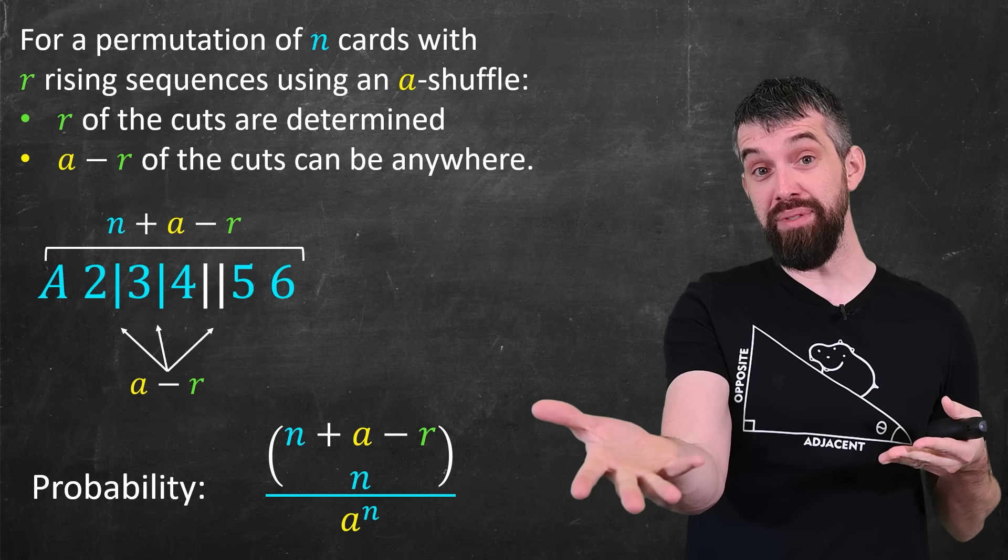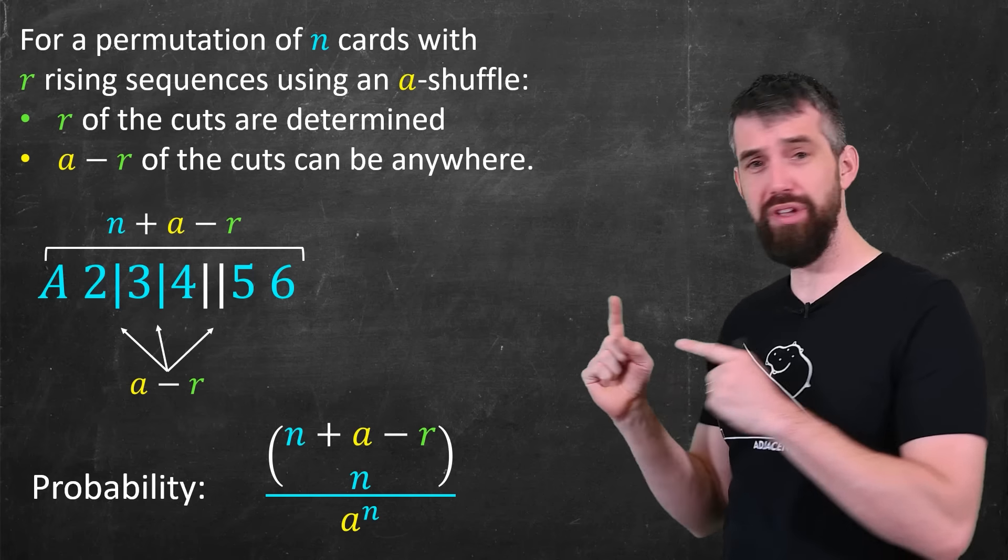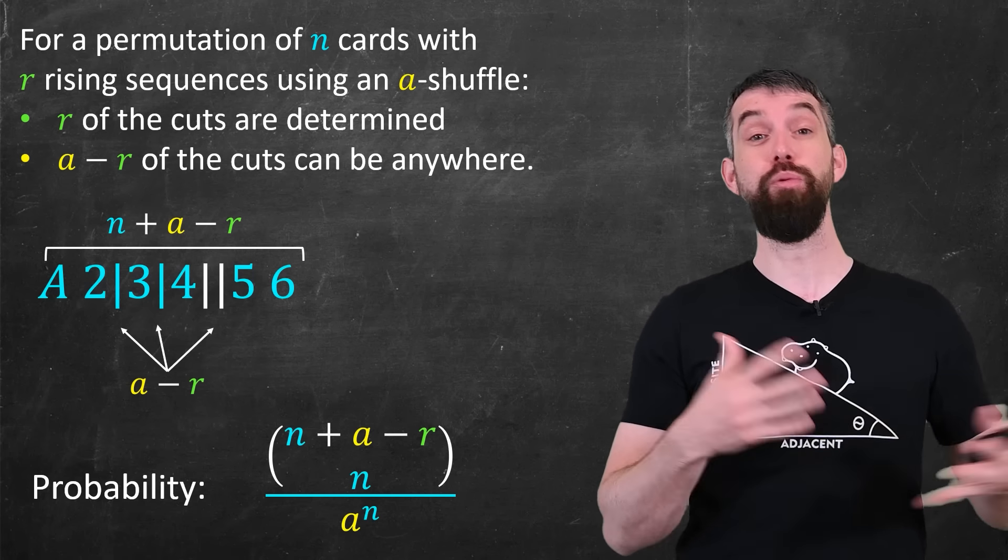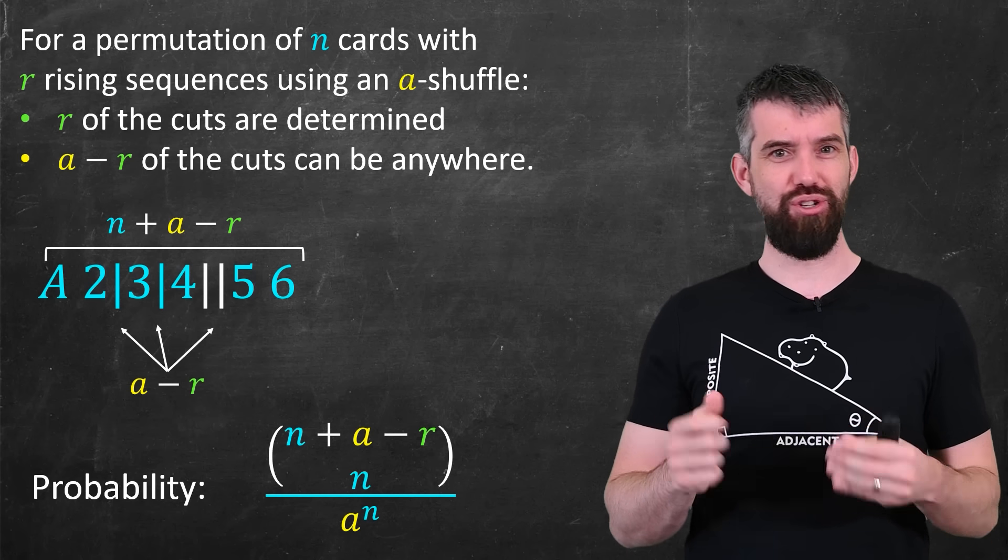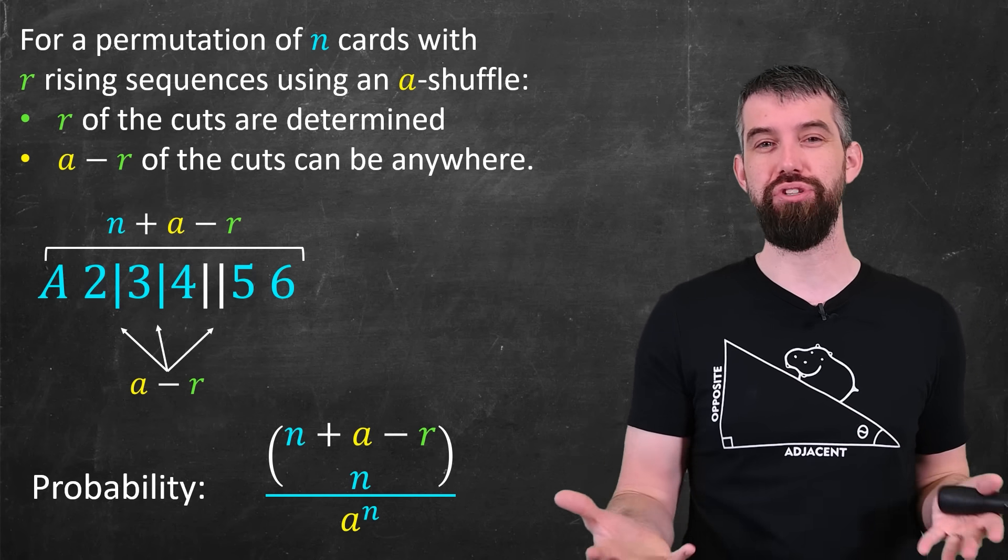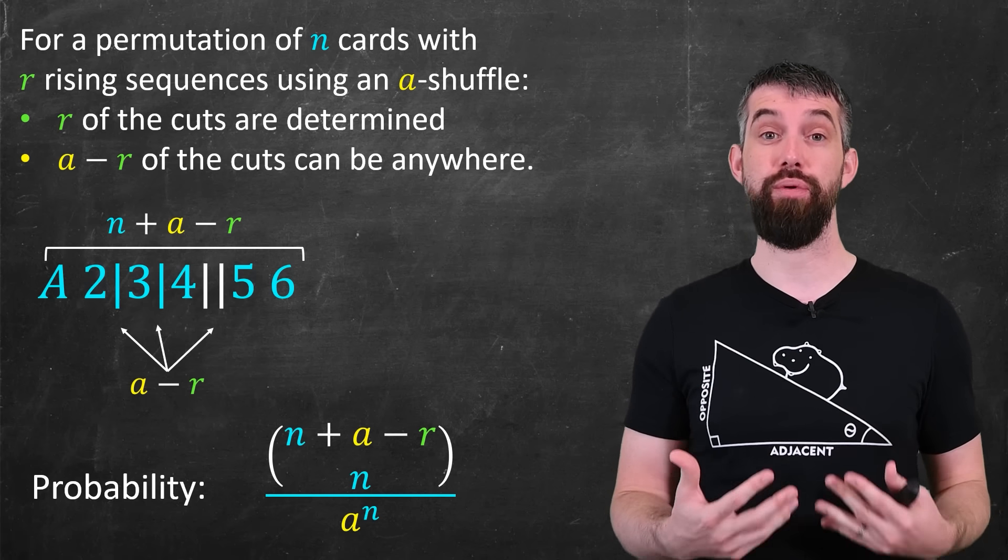Noting that doing, say, a two shuffle M times is just the same thing as a two to the M shuffle, the fact that I've computed these probabilities for a generic A shuffle is going to be really helpful for going where I actually want to go, which is to try and figure out how many shuffles should I have to do, regular old two shuffles should I have to do, in order to ensure that I get this close to random configuration.